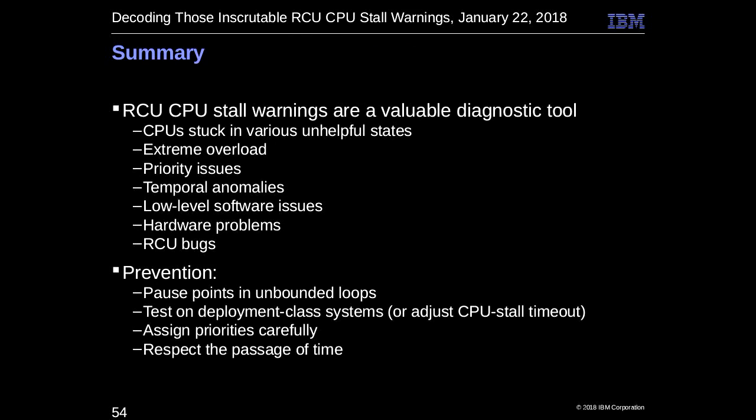Summary: this can be a helpful diagnostic tool, irritating though it can be — but that is a property of good diagnostic tools, their whole point is to irritate you and tell you your code's broken. We've gone through a bunch of reasons these can happen. You should have pause points in unbounded loops. Test on deployment-class systems or adjust your development system to get the same timing so you don't get surprised. For real-time things, assign priorities carefully, allow idle time, or use RCU priority boosting. If you're making a new architecture or new clocks, respect the passage of time.